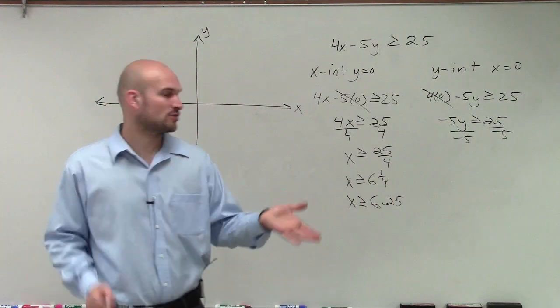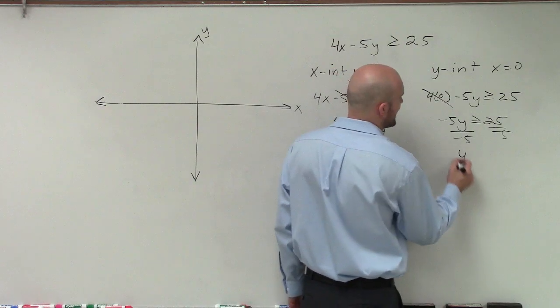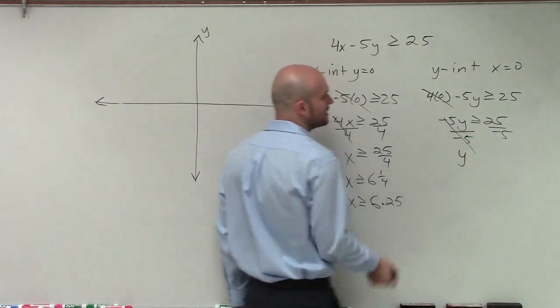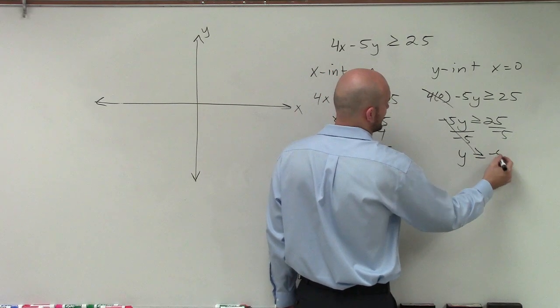All right, either way, whatever is going to help you kind of graph it, you could just rewrite that and check it out. Now, over here, we're dividing by negative 5. So remember, when we divide by negative 5, those go to 1, we need to make sure we flip the sign. So that's going to be y is now less than or equal to negative 5.